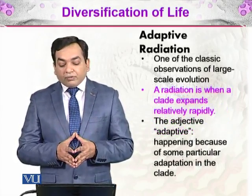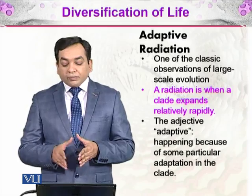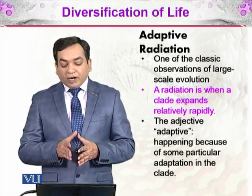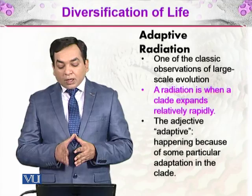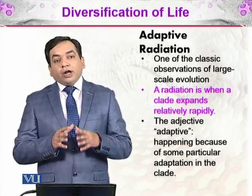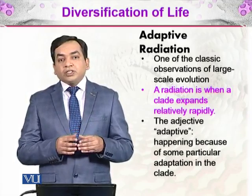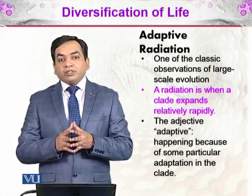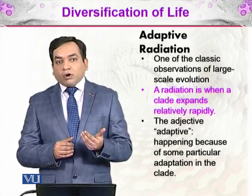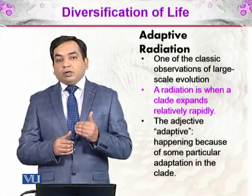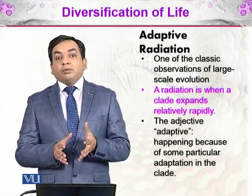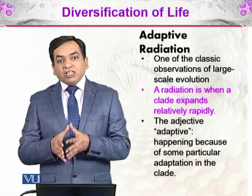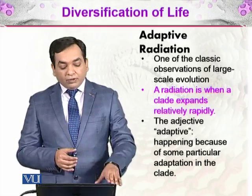Then there is adaptive radiation, one of the classic observations of large-scale evolution. Radiation is when a clade expands relatively rapidly, with the adjective 'adaptive' meaning it happens because of some particular adaptations in the clade. Adaptive radiation means that radiation took place because one particular feature ensured more successful offspring, and that adaptive feature led to more successful mating abilities in subsequent generations, increasing the number of species in that clade.